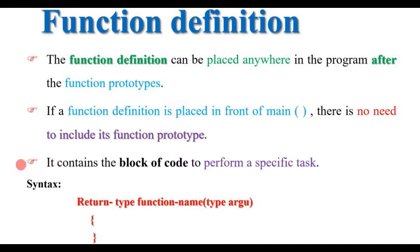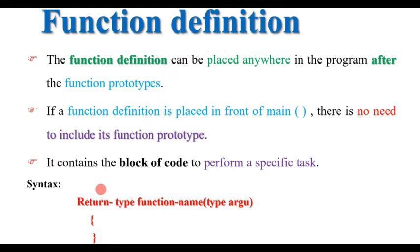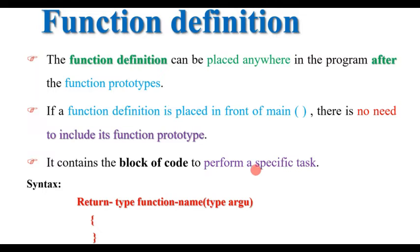The function definition contains the block of code — the body of the function. The function prototype contains the name of the function and its arguments. The function definition contains a specific task to be executed, such as swap or pass by reference.